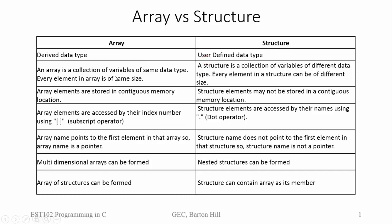Array is a collection of variables of same data type, so every element in an array is of same size. Whereas structure is a collection of variables of different data type, so every element in a structure can be of different size.